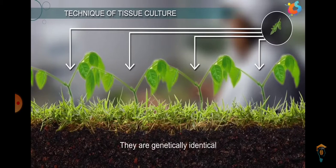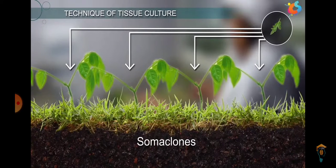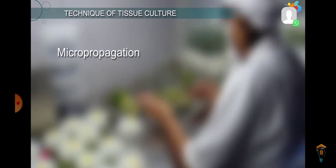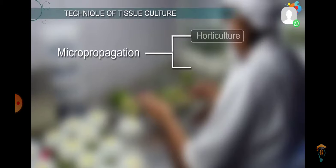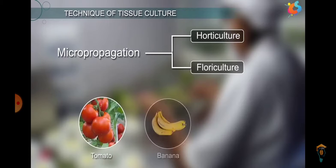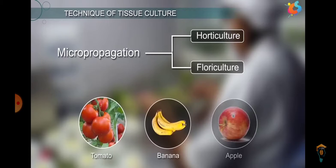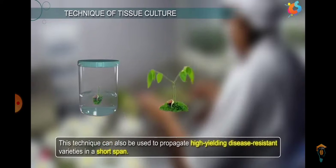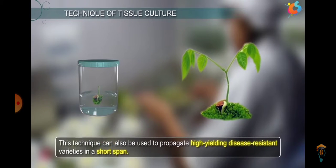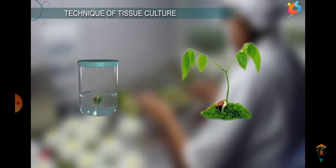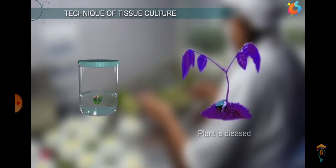From the same explant we obtain the plants, and therefore they are genetically identical and are referred to as soma clones. Micropropagation finds wide application in horticulture as well as floriculture, and could be used for the growth of tomatoes, bananas, and apples. The technique is used to propagate high-yielding, disease-resistant varieties of plants in a very short lifespan.